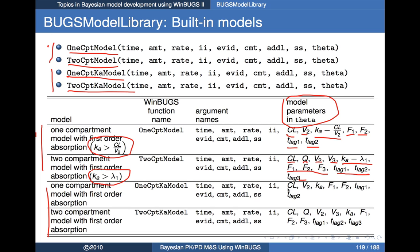The other one- and two-compartment models — the KA variants — are pretty much the same story except KA is specified directly. The only constraint now is KA has to be non-negative, but it does not have to be greater than lambda 1 or the elimination rate constant. Right now those are the only models built in.